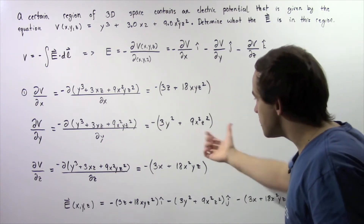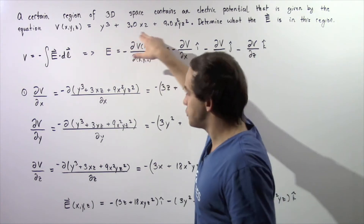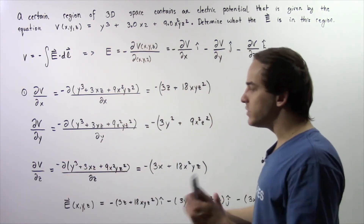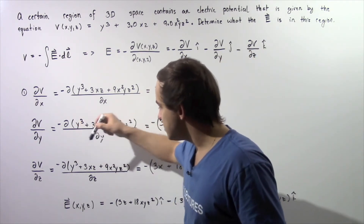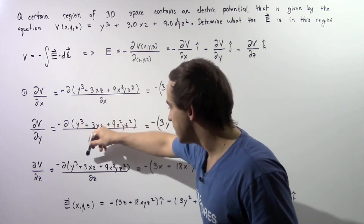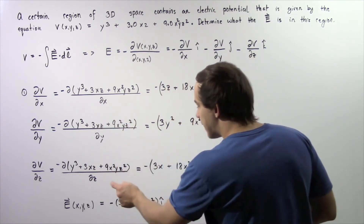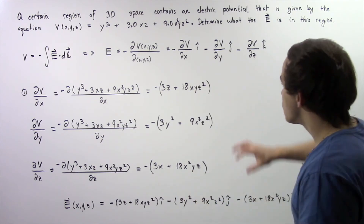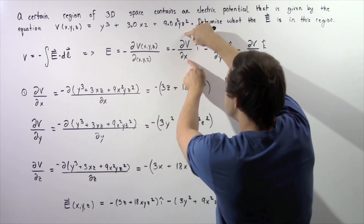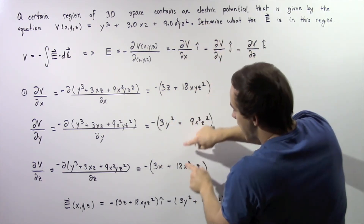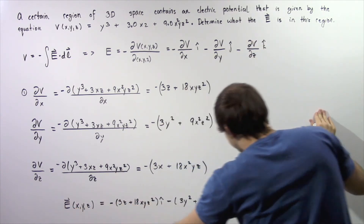Finally, we follow the same step and calculate the partial derivative of the voltage equation with respect to z, holding x and y as constants. The y-cubed term has no z, so it becomes zero. The 3xz term has a z, so it becomes 3x. The 9x²yz² term also has a z and it becomes 18x² times y times z. So now we can combine these three results, plugging each into the corresponding component of the electric field equation to get the final result.